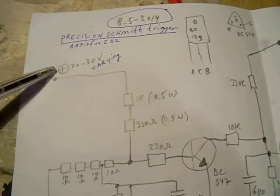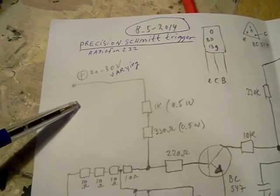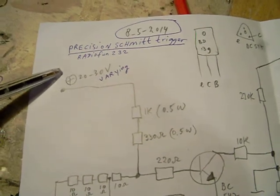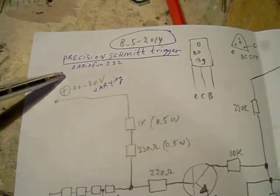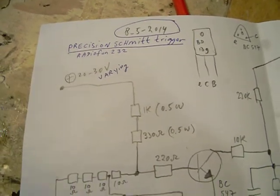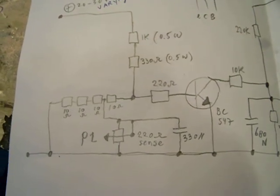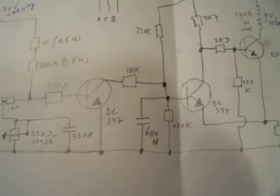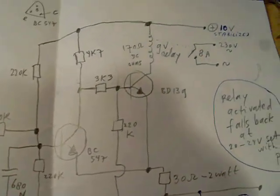When it goes beyond a certain low level something can switch on or off. When it gets higher over a certain level you can switch something on or off. That's all done by the relay by using a make or break relay.